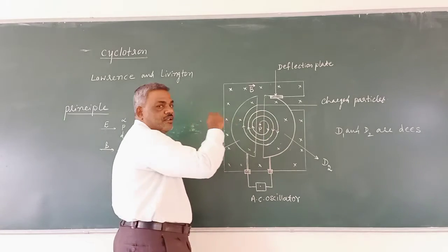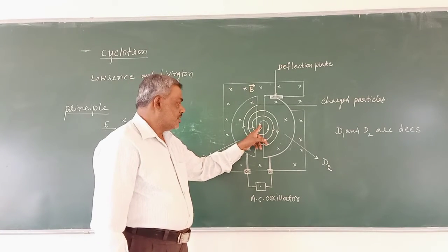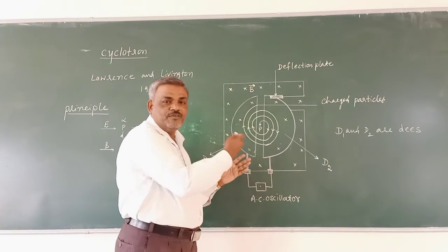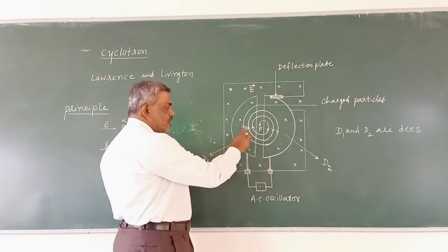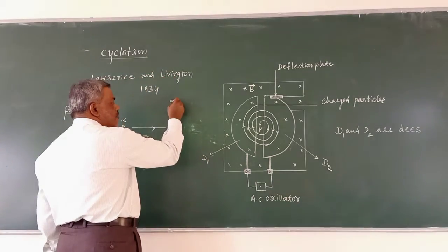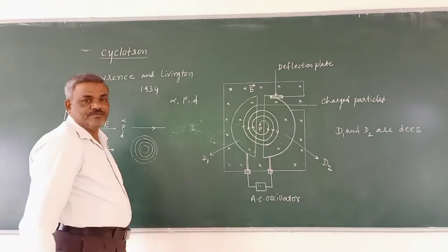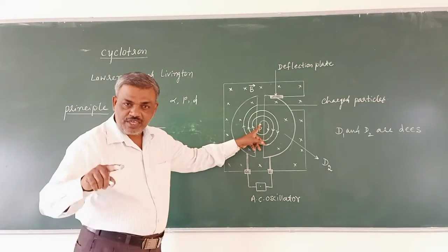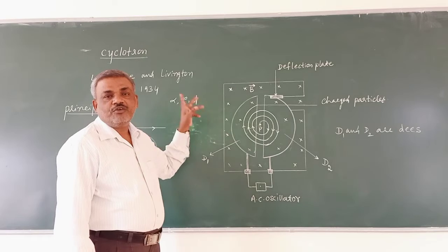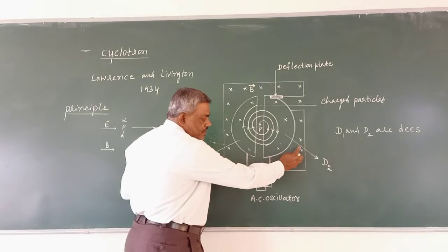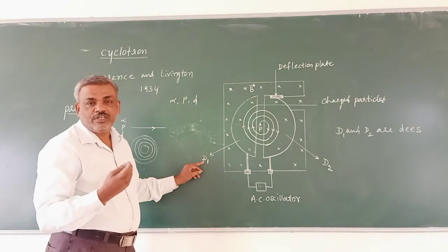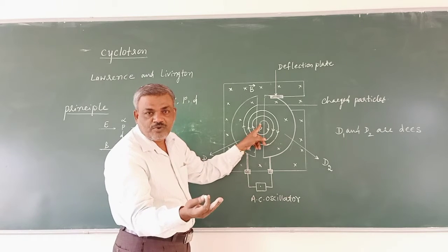There are two metal containers: D1 and D2. The source is kept in the gap between them and releases positively charged particles such as alpha particles and protons. The two Dees are connected to a high frequency oscillator. D2 is made negative potential and D1 is made positive potential.